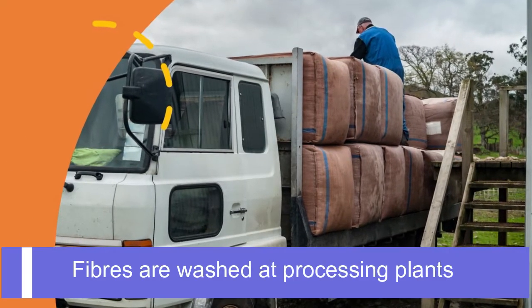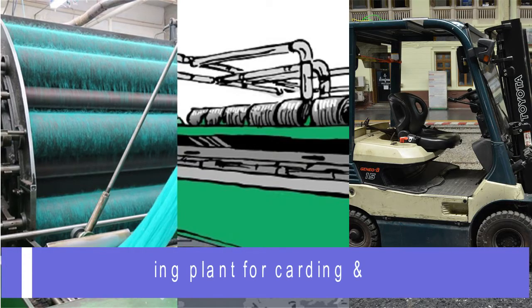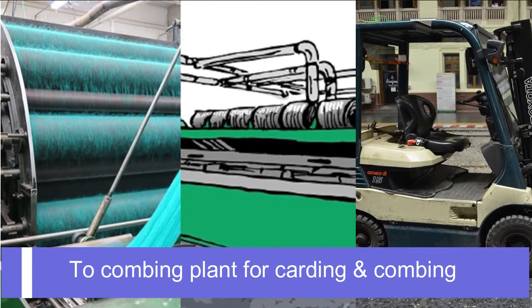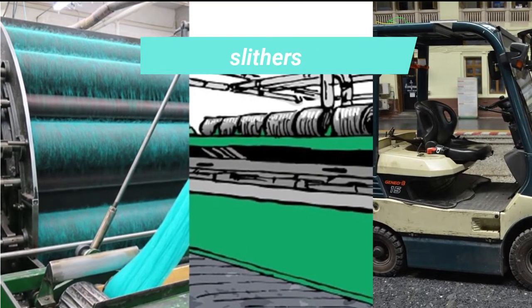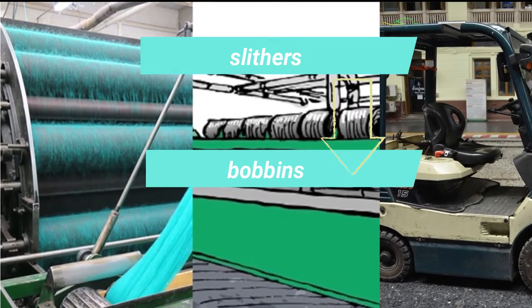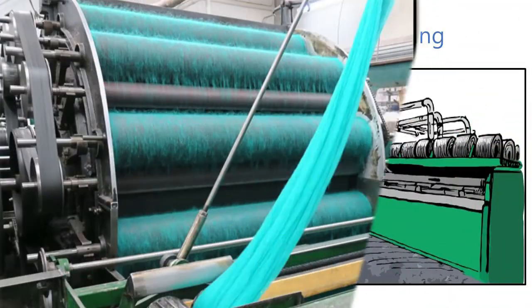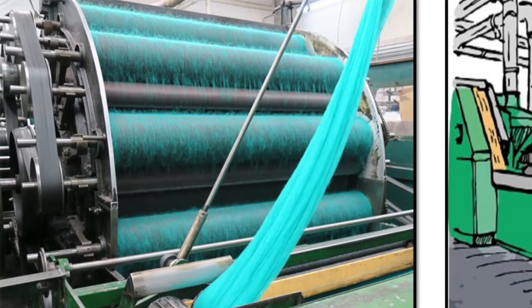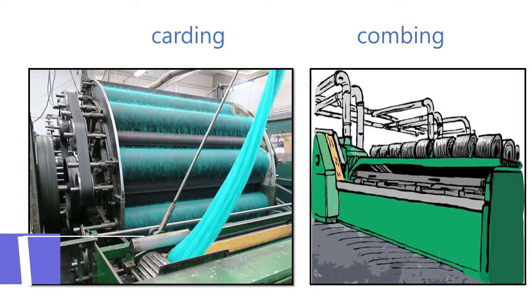Unwashed mohair bales are transported by trucks to the processing plants to be washed. After washing, the mohair is transported to the combing plants where it is combed into long continuous lengths called slivers. These slivers are processed into bobbins and mechanically pressed into bales of between 180 to 250 kilograms. These bales are then transported to other processing sites such as dyeing plants or spinning mills. Transport can include forklifts, trucks, or ships depending on the distance to be covered.